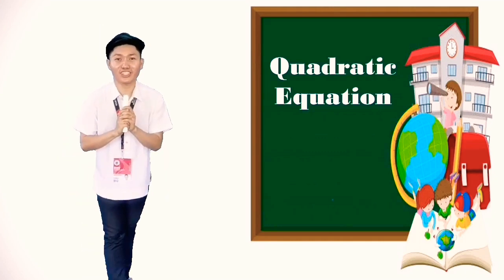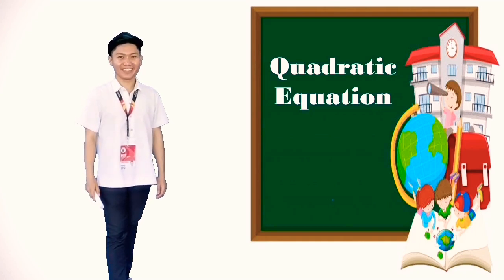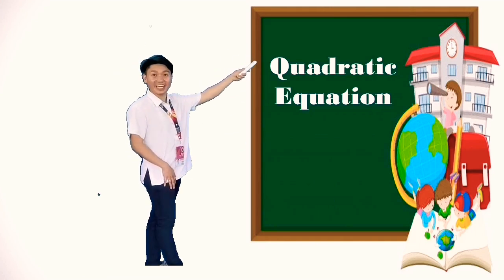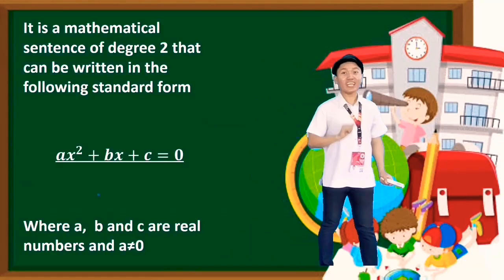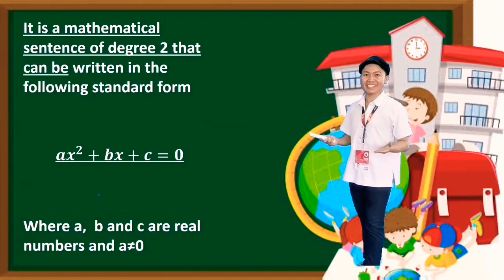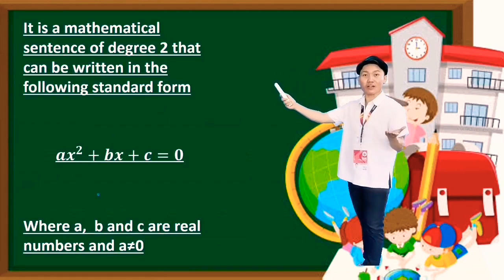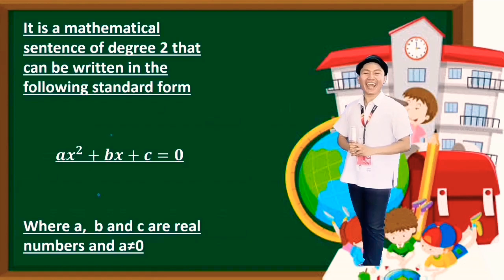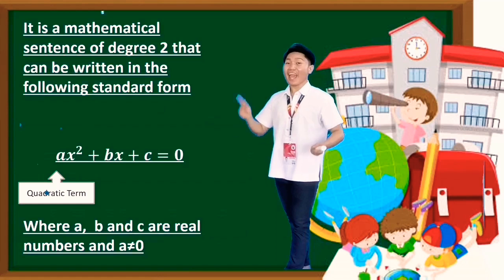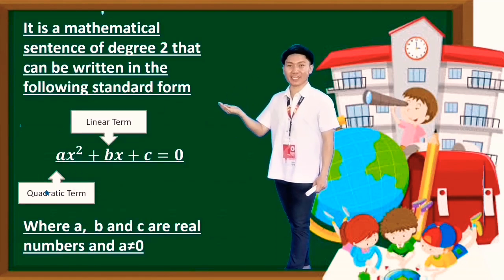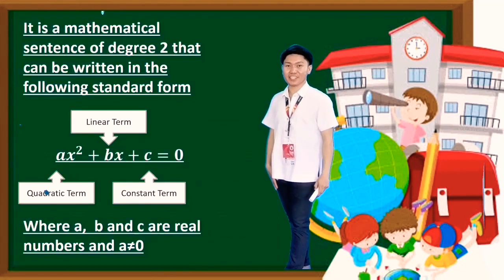Thank you so much! Now, can you give me the definition of a quadratic equation? A quadratic equation in one variable is a mathematical sentence of degree 2 in which it can be written in standard form ax squared plus bx plus c is equal to 0 where a is not equal to 0. In the equation, ax squared is what we call the quadratic term. bx is the linear term and c is the constant term.